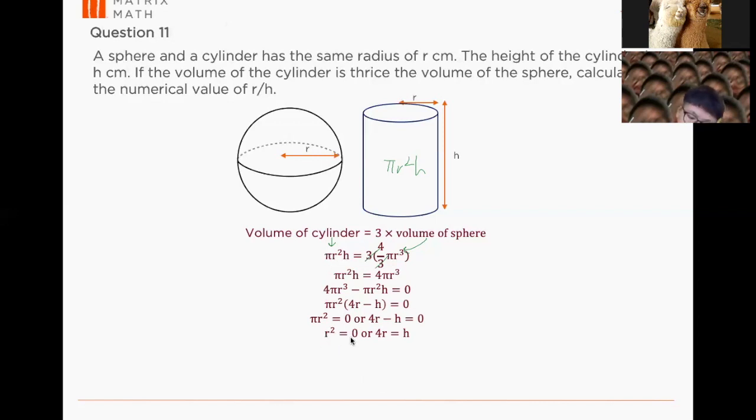So r² would be 0. So anything equals to 0, that means at the end, r equals to 0. But do you see your 4r equals to h here? So can you find what is r? So we reject the r² equals to 0. So your r will be h/4. So that's the first relationship. So this is method 1.